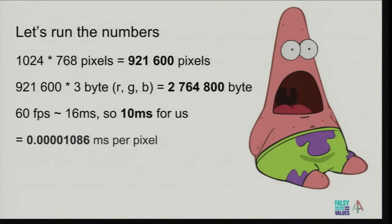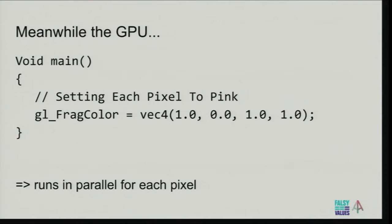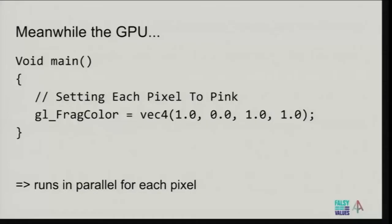This is how GLSL looks — this is a fragment shader. This function is called with a bunch of parameters that are not explicit — they're sort of like globals. For instance, where we are in the image, where we are in the fragment, and other things you can specify. In this case, all we do is define gl_FragColor, which is the variable that GLSL expects us to deliver when we are done. We just say: red 1, green 0, blue 1 — which is pink — and alpha 1 to make it opaque. This runs for every single pixel in parallel and that's really, really fast.